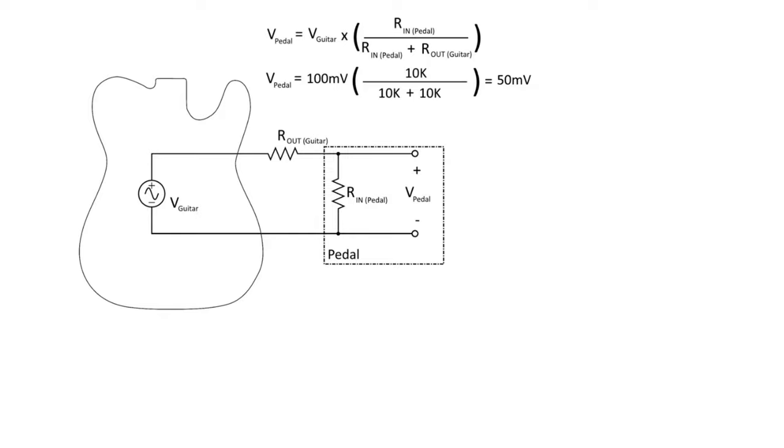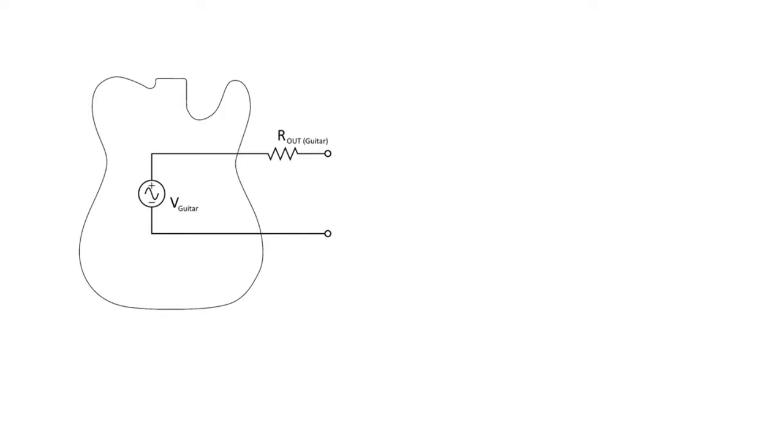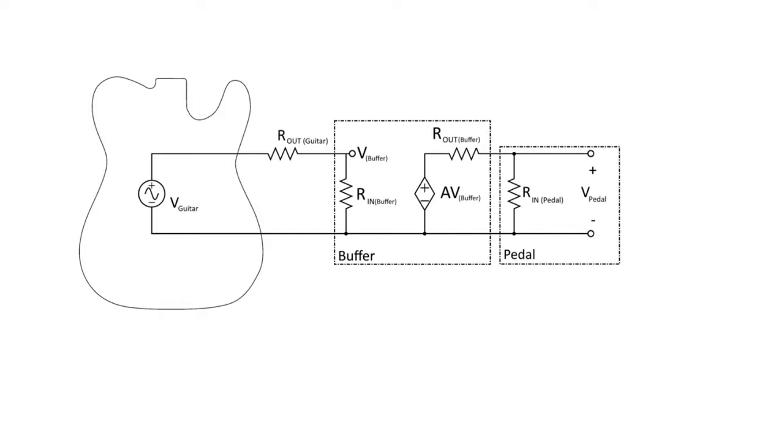So how do we resolve that? Well, let's remove these equations here and this pedal and let's throw a buffer into the mix. So now we have a buffer prior to the output signal getting into the pedal. So now we have to worry about what that V_buffer is here. And that is going to be also a voltage divider between the input resistance of the buffer and the output resistance of the guitar. So if we look at those same values, let's say the 100 millivolts again for the guitar. Input resistance of a buffer of 1 meg, which is definitely reasonable and we'll keep that same 10k output resistance of the guitar.